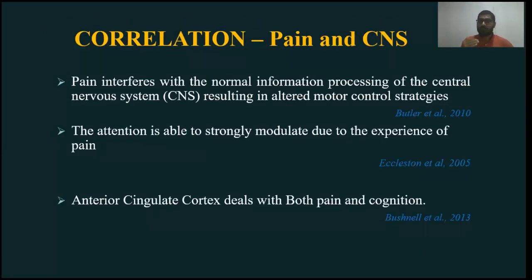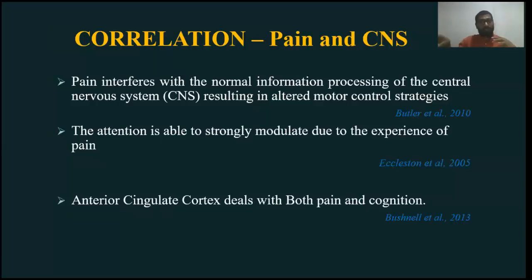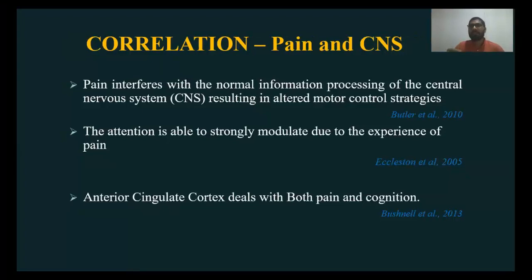Pain disturbs the information processing. There are two pathways — afferent and efferent. Afferent is the information going from the sensory to the central nervous system, while efferent is when the central nervous system sends information to the sensory part. These two pathways get disturbed by pain, and because of that, patients get less attention.